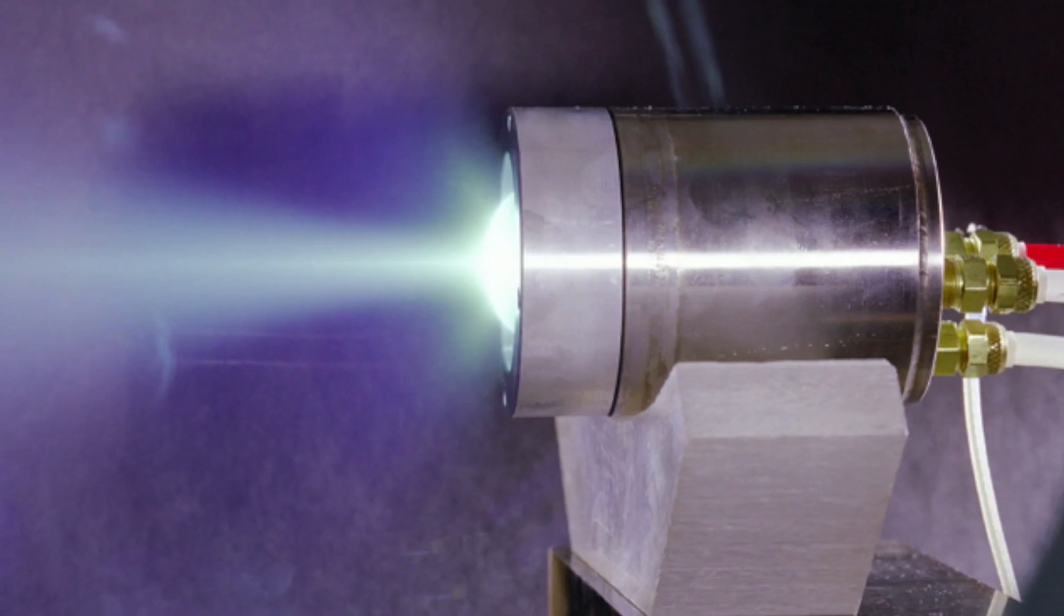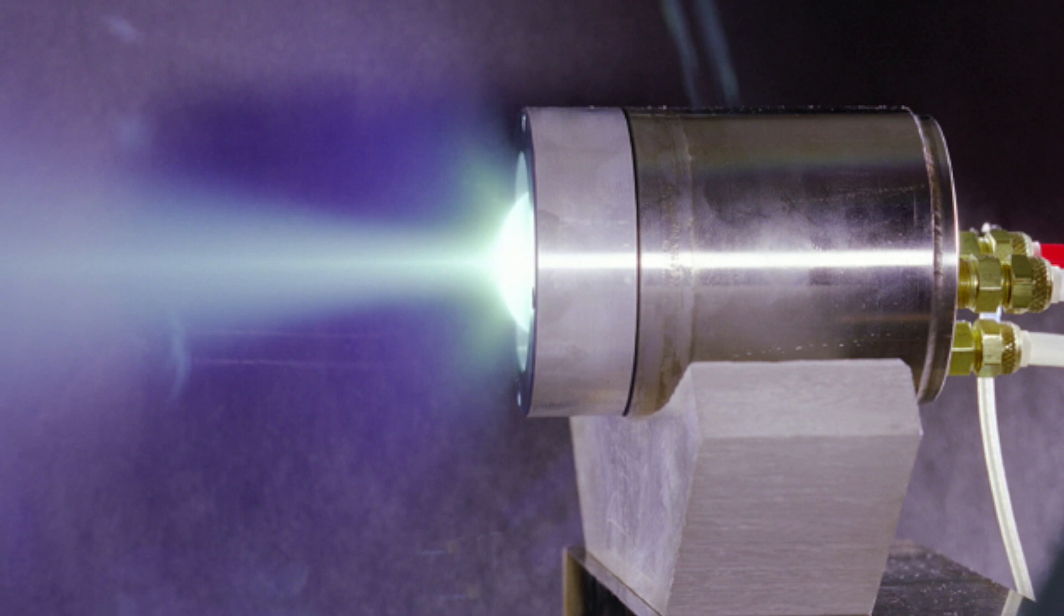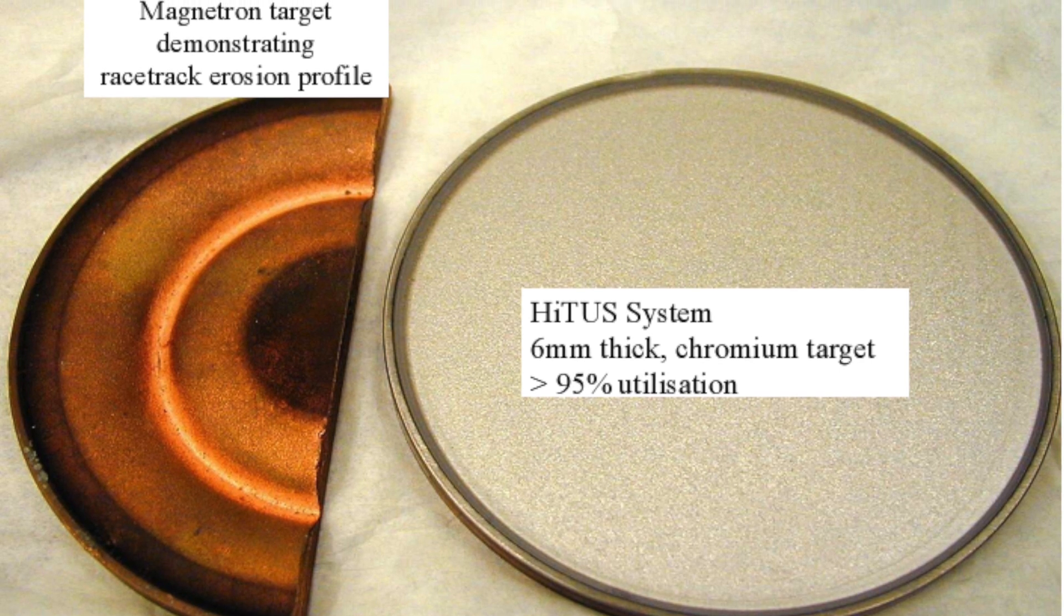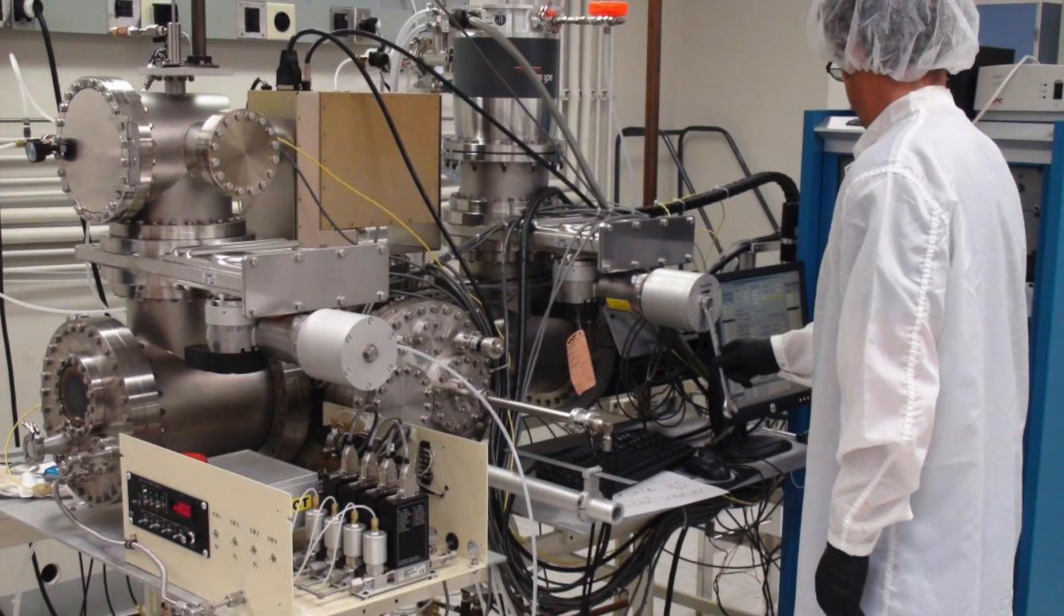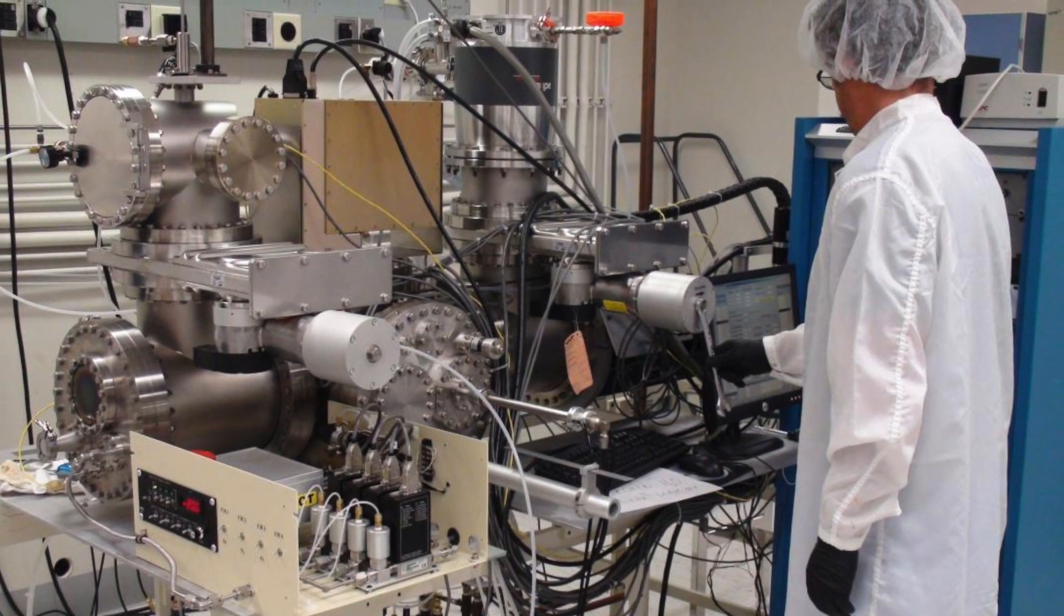Magnetron sputtering uses these devices, these magnetrons, which are objects that can be very small—something for research, maybe 10 centimeters in diameter—to very large. The largest I have seen is very close to four meters for production.